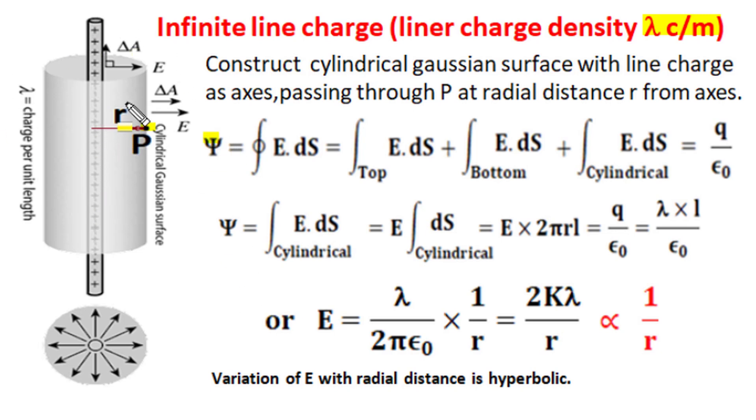So the total flux coming out of this closed Gaussian surface is closed surface integration of electric field intensity as E.dS is elemental flux from elemental area dS and total flux can be obtained by integration and integration is performed on closed Gaussian surface.